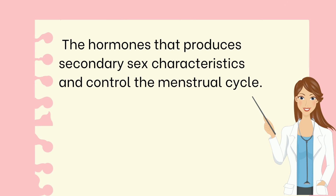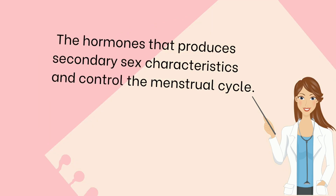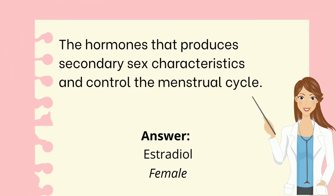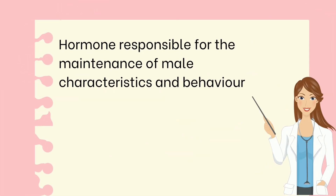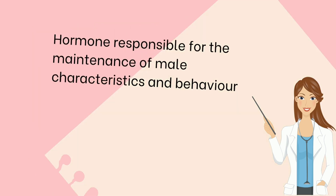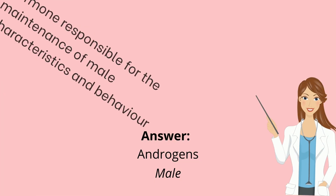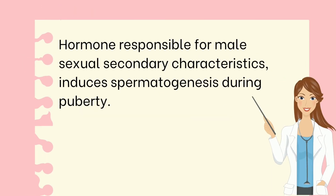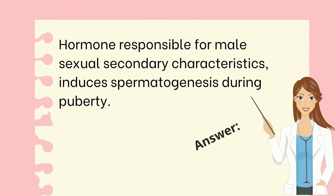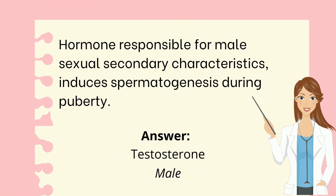Next, the hormones that produce secondary sex characteristics and control the menstrual cycle — the correct answer is estradiol, which is found in females. Next, the hormone responsible for the maintenance of male characteristics and behavior — the correct answer is androgens, which is found in males. Next, the hormone responsible for male sexual secondary characteristics and inducing spermatogenesis during puberty — the correct answer is testosterone, which is found in males.